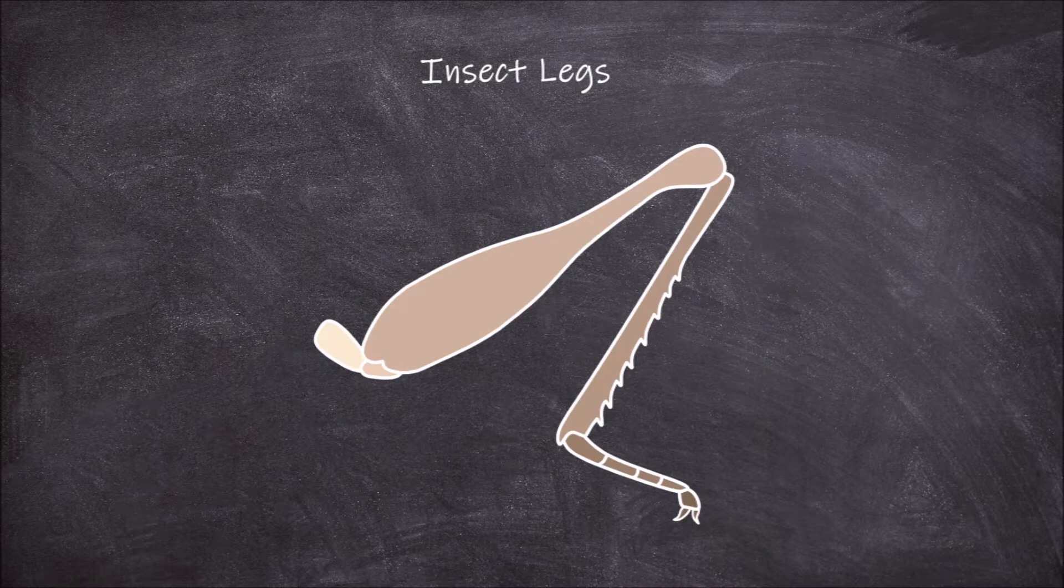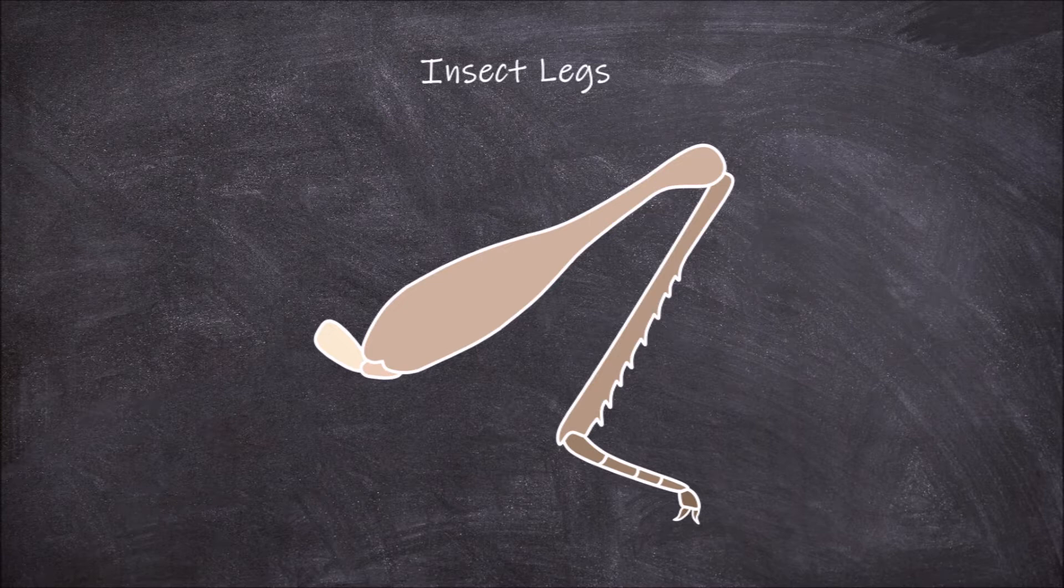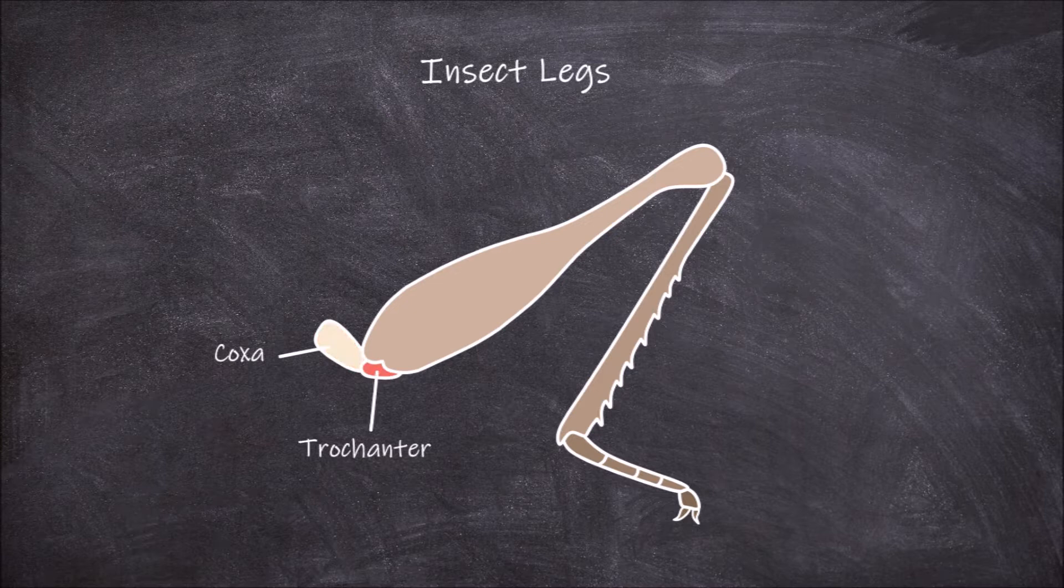The insect leg varies greatly but all are based on the same general structure consisting of 6 segments. The coxa is the first segment of the insect leg and is what attaches the leg to the thorax. It also articulates with the second segment of the leg, the trochanter.